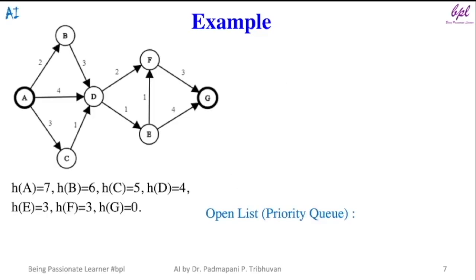Here we will have open list or priority queue and here we will have closed list or list of visited nodes. Initial state is A.